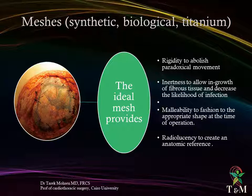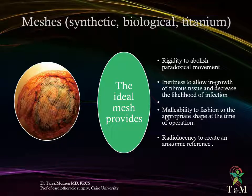The ideal meshes — synthetic, biological, and titanium — provide rigidity to abolish paradoxical movement, inertness to allow growth of fibrous tissue and decrease the likelihood of infection, malleability to fashion to the appropriate shape at the time of operation, and radiolucency to create an anatomical reference for inspection and planning of further radiotherapy in neoplastic pathology.